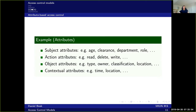It can also be attributes of the object, such as type, owner, classification, or location. All of these three types of attributes allow us to use attribute-based access control to implement the previous policies. It's easy to see that we can implement identity-based access control because identity is a subject attribute, and we can have the different operations as action attributes, and the identity of the object is also an attribute we can use. We can also implement role-based access control because we can specify different roles for the subject as subject attributes, and we can also allow for contextual attributes such as the time the operation is happening, the location, and so on.